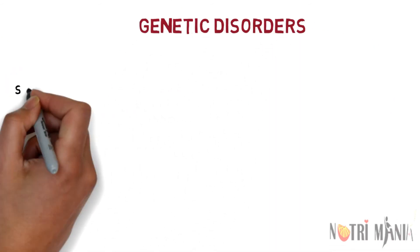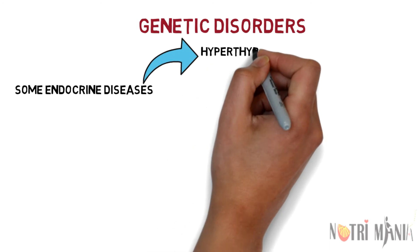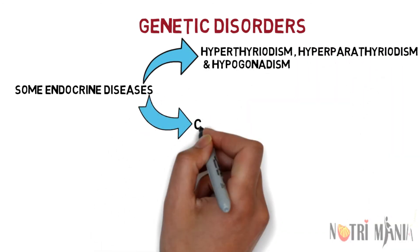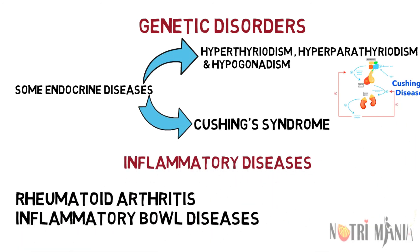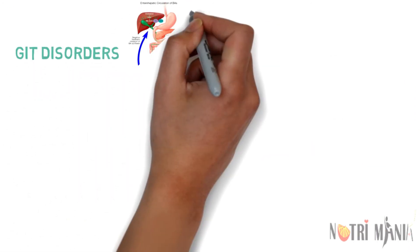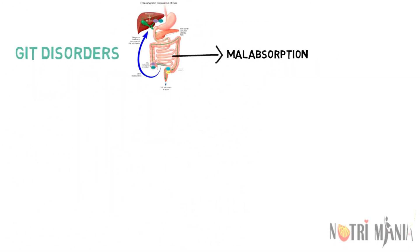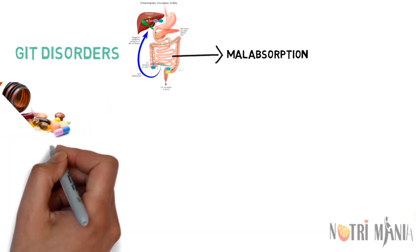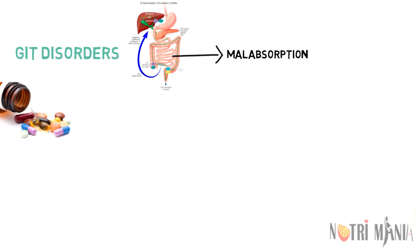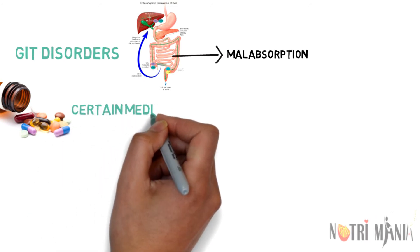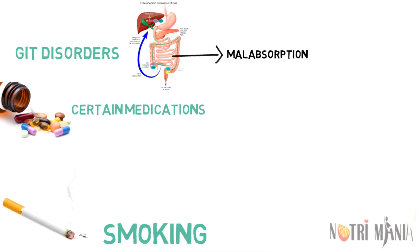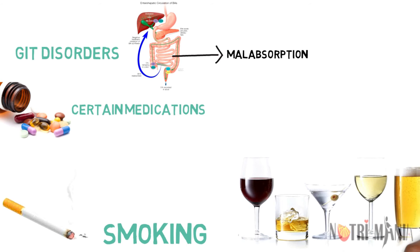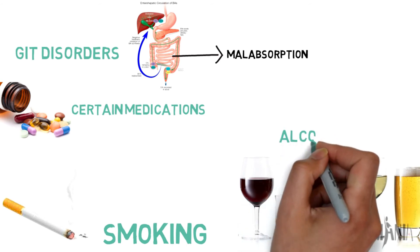Genetic disorders like polygenic inheritance, endocrine diseases like hyperthyroidism, Cushing's syndrome, and hypogonadism, inflammatory diseases like rheumatoid arthritis, and GIT disorders like malabsorption and chronic liver disease all raise the odds of getting osteoporosis. Certain medications like steroids, glucocorticoids, and aromatase inhibitors taken long-term can also increase your risk. Smoking is bad for bones, and heavy consumption of alcohol can lead to thinning of the bones and make fractures more likely.